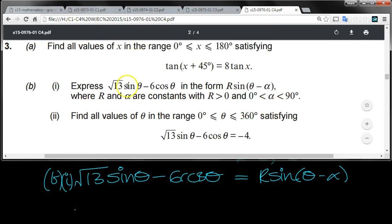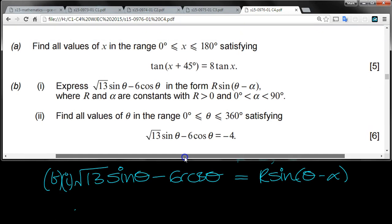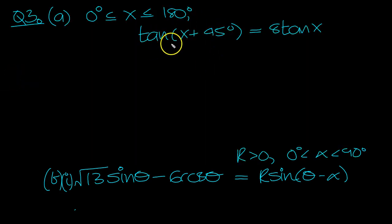Question three. Here's part A. Let's have a look at this one then. So tan A plus B is tan A plus tan B. Tan 45 is 1 over 1 minus tan A, tan B, which is just tan X, equals 8 tan X.